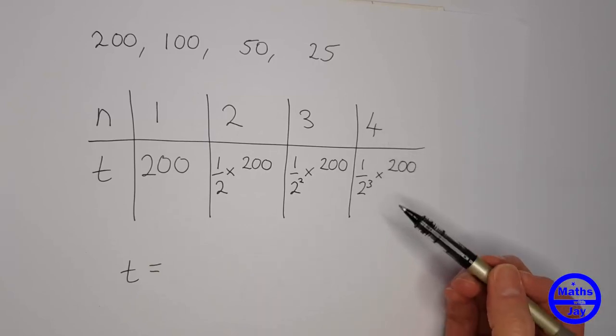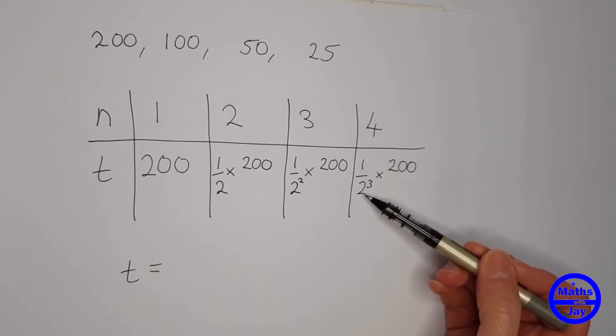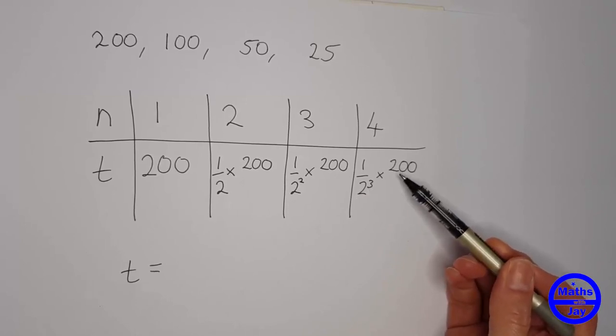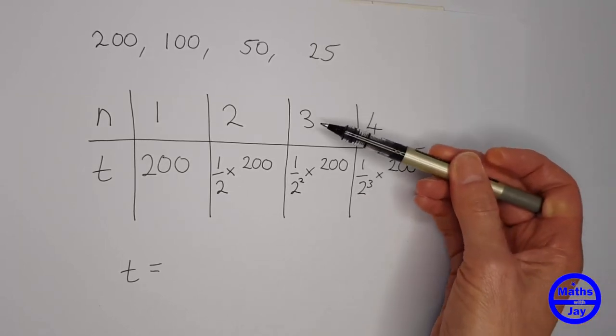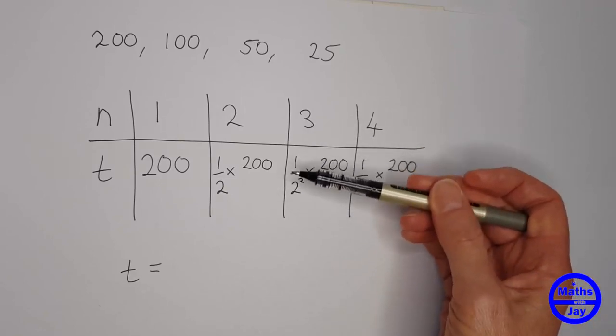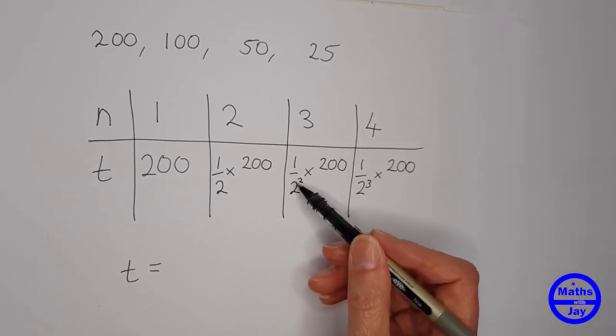So if we look at the last one what we can see we've got 1 over 2 to the power of 3 times 200 coming from an n number of 4, so for the fourth term, for the third number it's the same sort of thing. The only difference is this number here, isn't it?